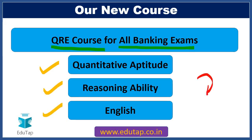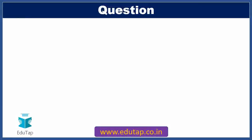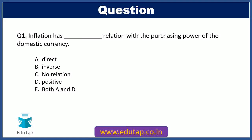Moving on to the first MCQ of this video series. Our first question is a fill-in-the-blanks type: inflation has [blank] relation with the purchasing power of the domestic currency. Option A: direct relation. Option B: inverse relation. Option C: no relation, that is unrelated. Option D: positive relation. Option E: both A and D, that is inflation has direct as well as positive relation with the purchasing power of the domestic currency.